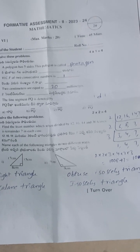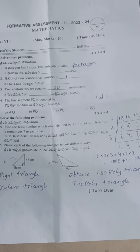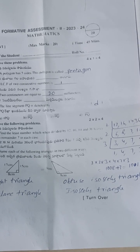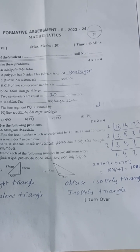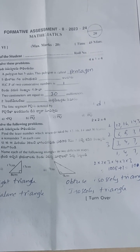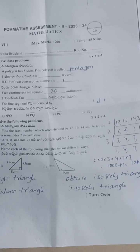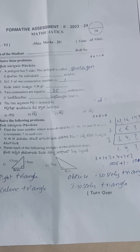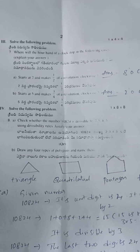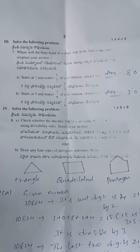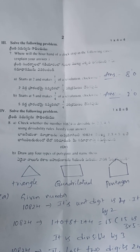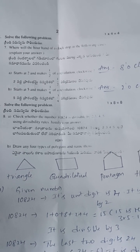The second triangle has one angle above 90 degrees, so it is an obtuse triangle. Also, two sides are equal, therefore it is an isosceles triangle. So it can be named an obtuse isosceles triangle.